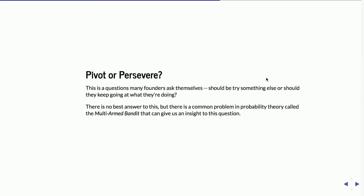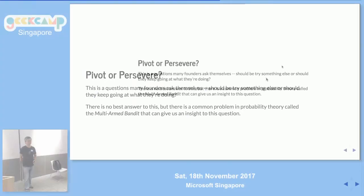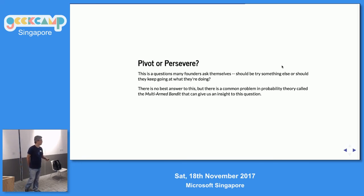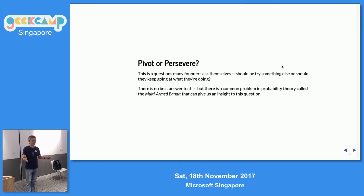The third problem many startup founders encounter is: should I continue what I'm doing — should I persevere, stick to what I'm doing — or should I pivot, go do something else? Maybe it's not working out, or maybe there's something better I should be doing. There is no best answer to this. But there is a common problem in probability theory called the multi-armed bandit that can give us some insight. This is a pretty big problem, quite widely researched with many papers on it. What I'm giving is just a flavor of potential algorithms.